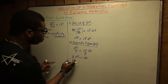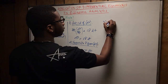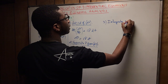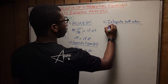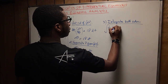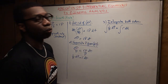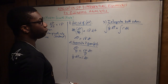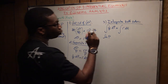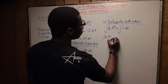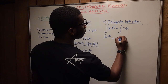Step three: we integrate both sides. The integral of 1 over p dp equals the integral of r dt. Applying the antiderivative, the antiderivative of 1 over p is ln p, and it's better to write the plus c on only one side. So we get: ln p equals rt plus c.